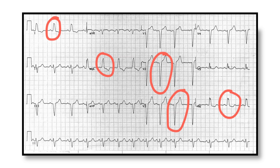Now when we're trying to diagnose an acute myocardial infarction in the setting of pre-existing left bundle branch block, what we're looking for is a deviation from this rule. This is summarised within the Sgarbossa criteria.